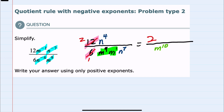I haven't changed a sign. Looking at the N's, I have N4 and N7 with the same base N, but they're being divided. So I can write that as the base N in the numerator, where the exponent is the 4 from the top minus the 7 from the bottom — 4 minus 7 equals negative 3.